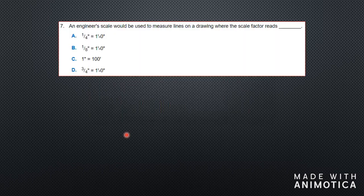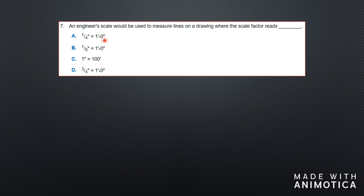Question seven: an engineer scale would be used to measure lines on a drawing where the scale factor reads what? You need a larger scale for an engineer. The engineer scale measures larger areas. Looking at the ratios, the main one is one foot to a hundred feet. You would not measure one-foot increments for a bridge — you would measure probably a hundred feet, because that's what engineers mostly work on. They use an engineer scale for larger projects.